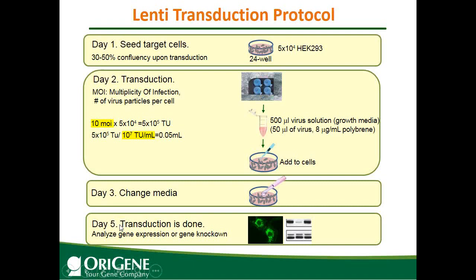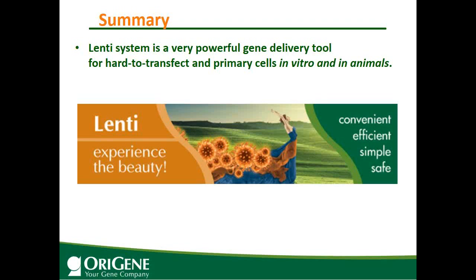The next day, change the cell culture media. Day 5 — 72 hours post-transduction — cells are ready to analyze for gene overexpression or gene knockdown. If your lentiviral vector contains a selection marker, you can directly split cells and add antibiotic to the growth media. In summary, the lentiviral system is a powerful gene delivery tool for hard-to-transfect primary cells both in vitro and in animals — convenient, high transduction efficiency, simple protocol, and safe to use.